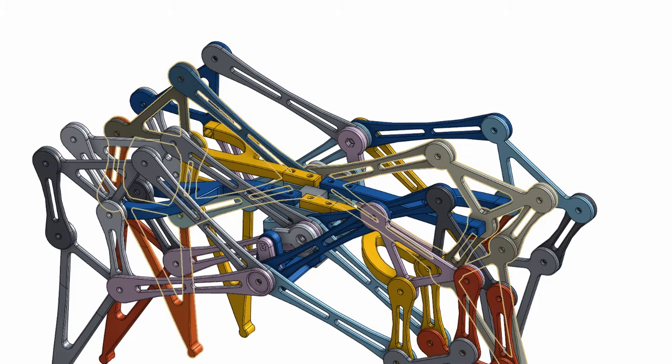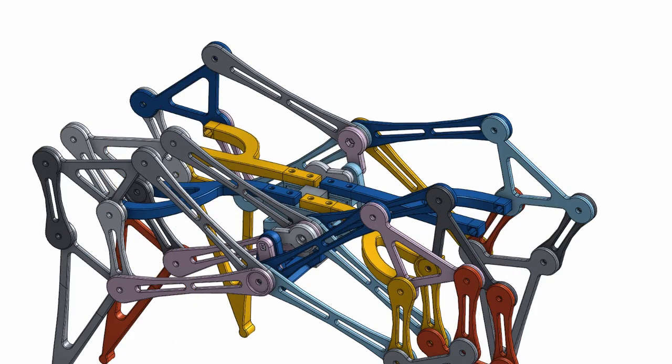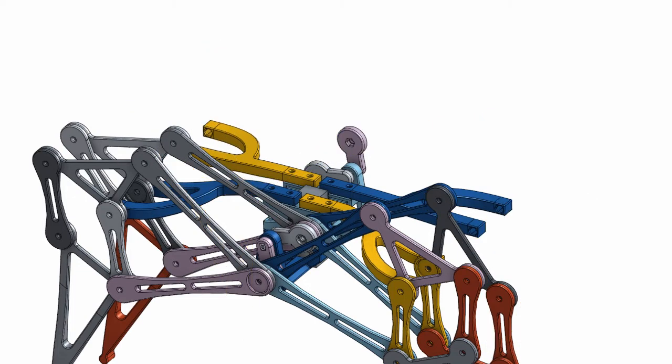The legs are spaced apart using nylon washers, so that the contact area between the printed parts is at a minimum where parts will be moving, which greatly reduces the friction in the walker.